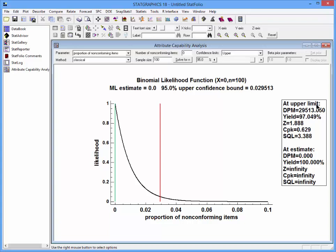The upper quality limit estimates are particularly interesting because we can claim with 95% confidence that our defects per million is no more than 29,513, that our yield is at least 97%, that Z is at least 1.888, CPK is at least 0.629, and the sigma quality level is no less than 3.388.